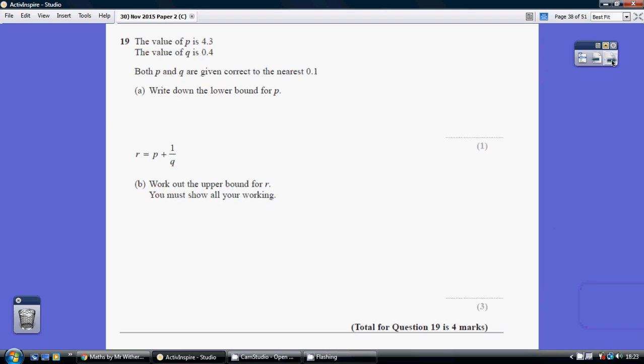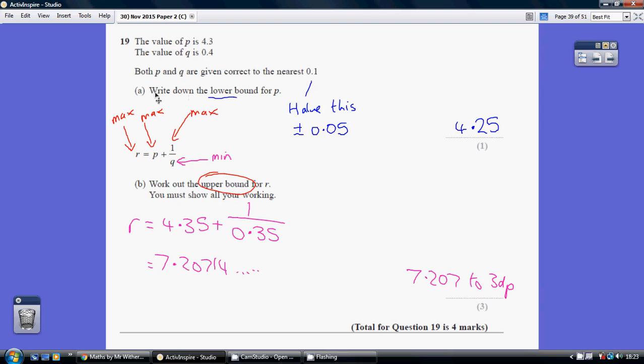Question 19. Write down the lower bound for P. So what's the smallest value that P can be, yet when rounded to the nearest 0.1, it is 4.3.